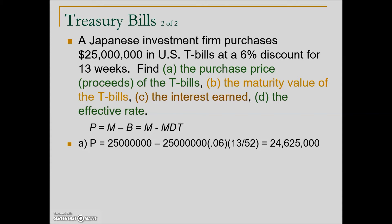The proceeds, which ultimately means the purchase price for this Japanese investment firm, is found by taking the maturity value minus the bank discount. We replace the bank discount variable B with the equivalent — maturity value times discount rate times time — then substitute in the specific values. The Japanese investment firm paid out $24,625,000 as proceeds for the U.S. government to use for the next 13 weeks.